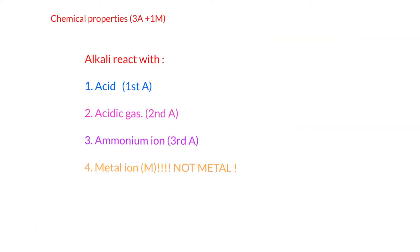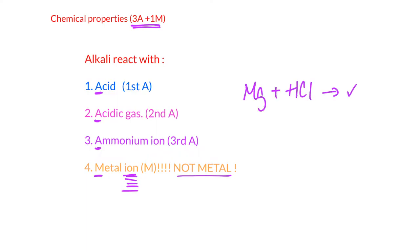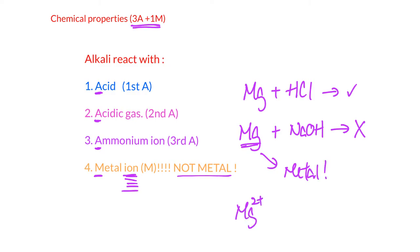For chemical properties, remember there are four kinds of reactions: 3A plus 1M. The three A's are: react with acid, react with acid gas, and react with ammonium ions. The 1M is metal ions — emphasize it is the ion, not the metal itself. If you add magnesium metal into sodium hydroxide, there is no reaction. However, if you add magnesium ions from magnesium sulfate solution into NaOH, there will be a reaction.